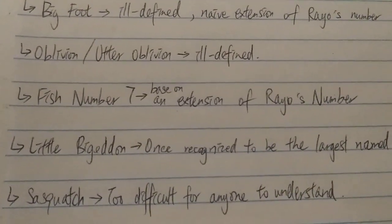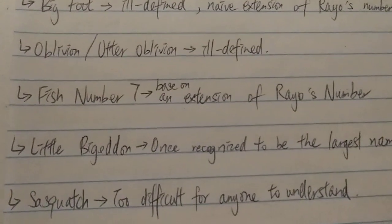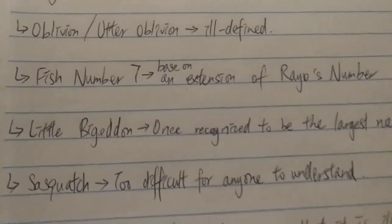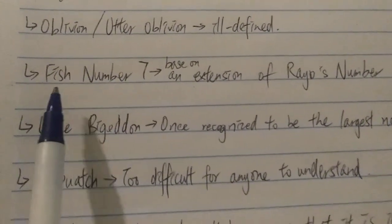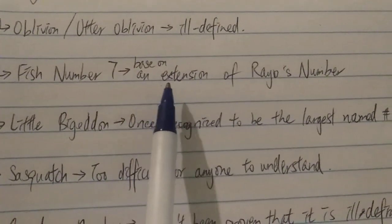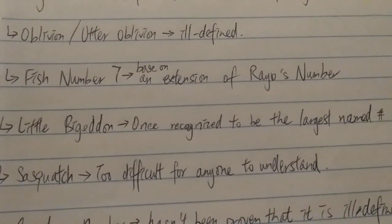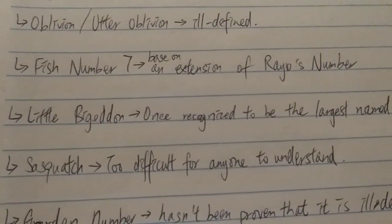Those numbers, all the numbers here are hard to explain using daily mathematics. So make sure you check them out yourself. Next, you have Fish Number 7, which is based on an extension of Rayo's number. So it's not generally accepted as the biggest named number.